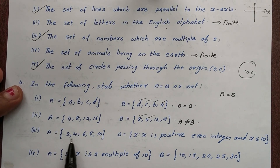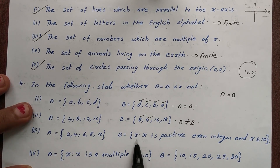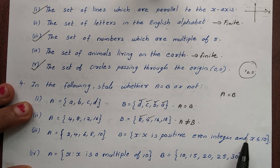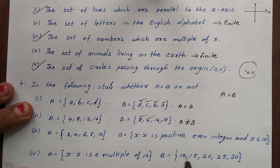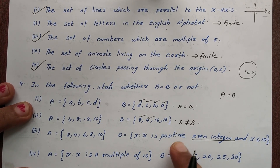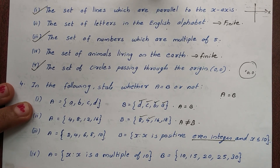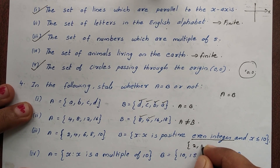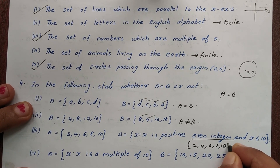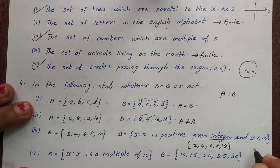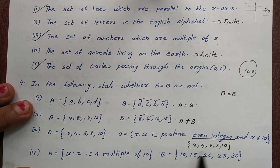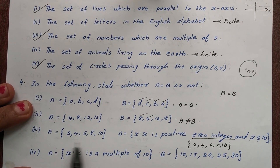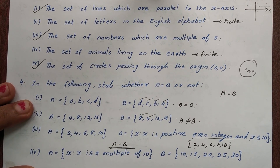A = {2, 4, 6, 8, 10} and B = {x : x is a positive even integer and x less than or equal to 10}. Positive even integers up to 10 are 2, 4, 6, 8, 10. So A is equal to B.